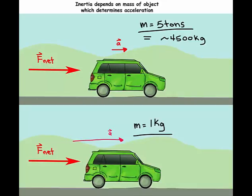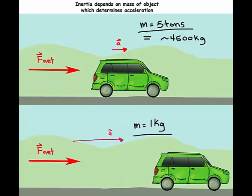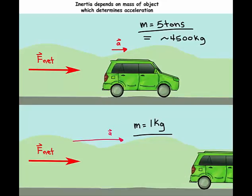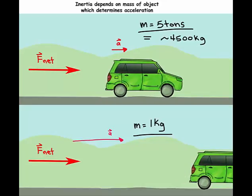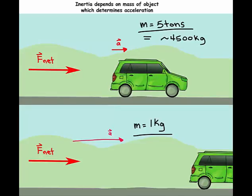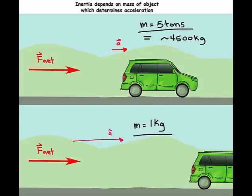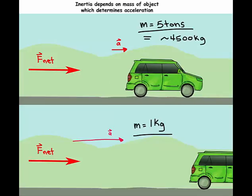If we have a small mass such as 1 kg then it would be easier for the car to accelerate quickly because it's easier to change its state of motion from not moving to moving. It's much harder to change the state of motion of the car that weighs 5 tons.